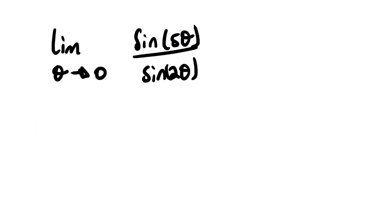As usual, the first thing we need to do is direct substitution, then check whether our answer is valid. Once we substitute zero, we get sine zero over sine zero. We know that sine zero equals zero, so we end up with zero divided by zero, which is undefined.